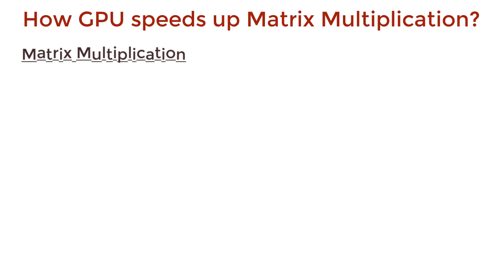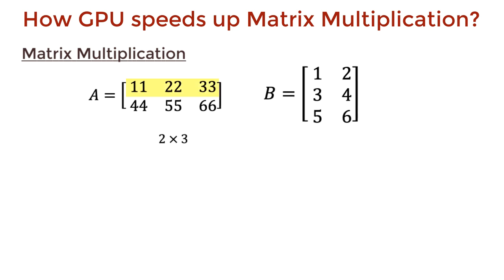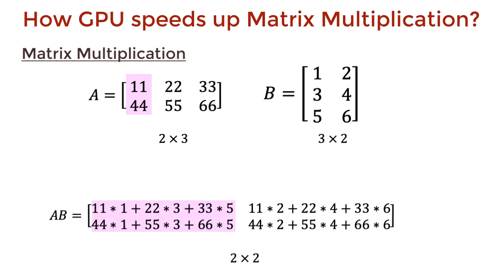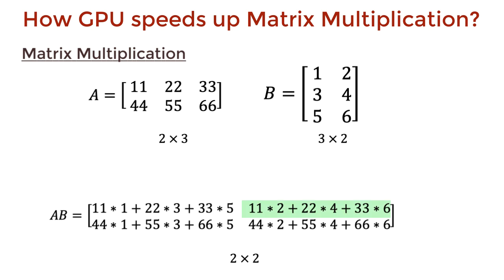Let's start with a quick review of matrix multiplication. If you want to multiply matrices A and B, the number of columns in A should be the same as the number of rows in B. The output product will have the same number of rows as A and the same number of columns as B. The first element is computed by taking the first row of matrix A and the first column of matrix B, then taking the element-wise product and summing that up. The element in the first row and second column is computed by taking the first row of A and the second column of B, taking the element-wise product and summing that up. Similarly, we compute the other elements.